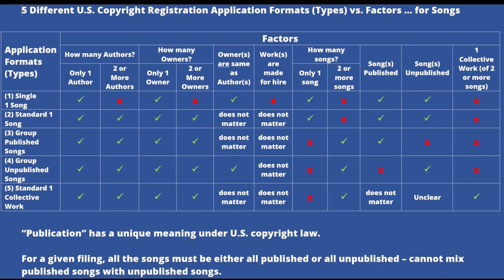In summary, you can use this table to see which factors might be applicable to your situation, and which of these five different U.S. copyright registration applications they might trigger. And shortly, we will jump over to the U.S. copyright.gov website and look briefly at each one of these five different approaches.